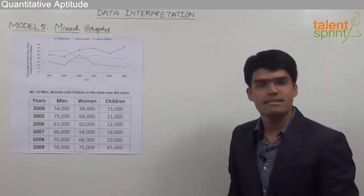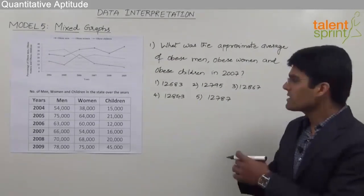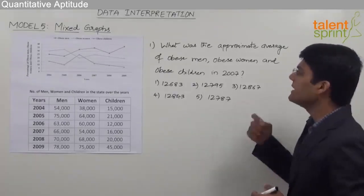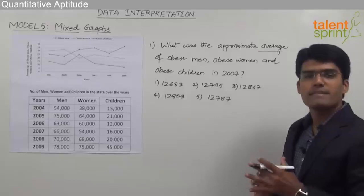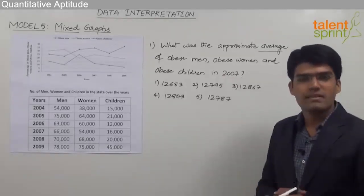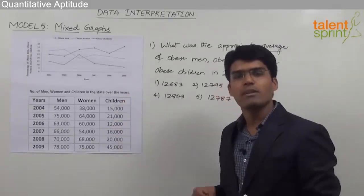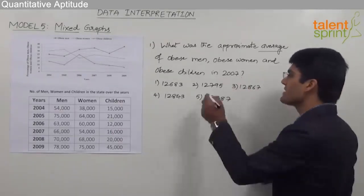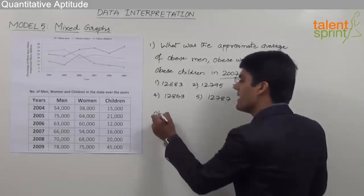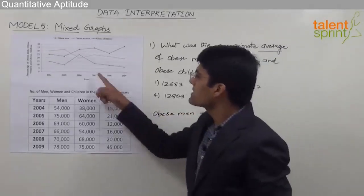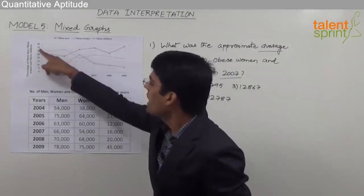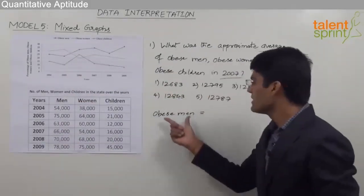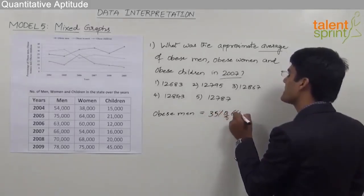Let us now look at the various questions asked with this data. The first question is: what was the approximate average of obese men, obese women, and obese children in 2007? We need to find each of those values for the year 2007 and then take the average. Obese men in 2007: the percentage is 35 and total men in 2007 is 66,000, so 35% of 66,000.